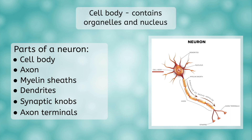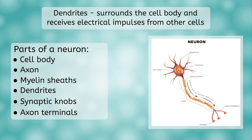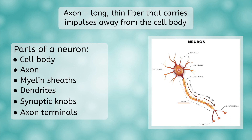The cell body is the large part of the cell and functions like any other cell, containing organelles and the nucleus. The cell body is surrounded with dendrites, or branches from the cell body that receive impulses from other cells and send them into the cell body. The axon is a long, thin fiber that carries impulses away from the cell body. One way to remember this is that both axon and away start with the letter A.